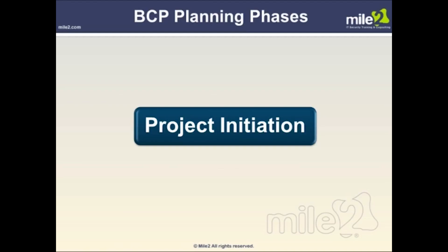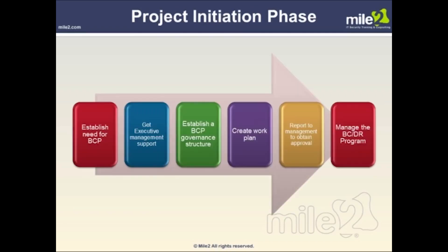During the project initiation phase, project requirements and structure are being discerned. The focus is to understand the background underlying the need for such a project, the project scope, objectives, goals, and teams required to address the different interrelated activities of business continuity planning development, implementation, and maintenance. The outcomes of the project initiation phase are to: 1. Establish the need for business continuity planning. 2. Get executive management support. 3. Establish a business continuity planning governance structure. 4. Create a work plan. 5. Report to management to obtain approval. 6. Establish management capabilities to sustain the business continuity and disaster recovery program.